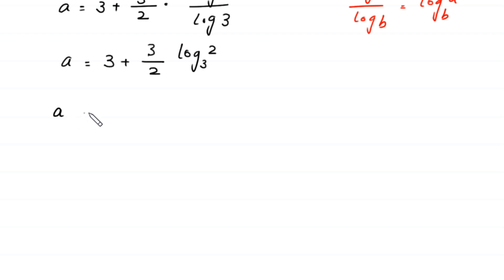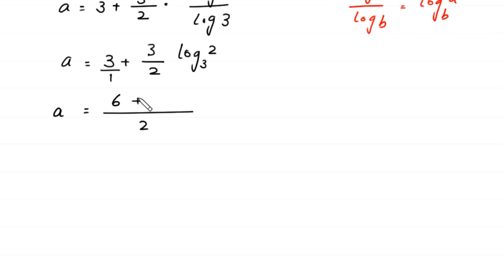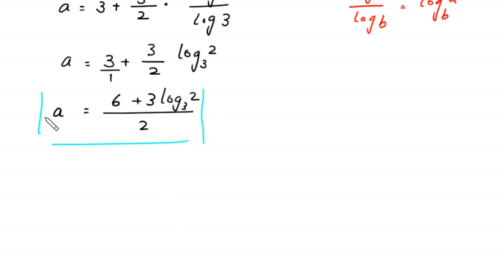Next, a is equal to — we can write the denominator of this 3 as 1, and we take LCM of this 1 and this 2. LCM of 1 and 2 is 2, giving us 6 plus 3 times log base 3 of 2, all divided by 2. This is the value of a — this is the final answer of this equation.